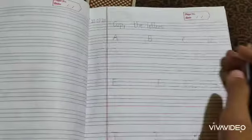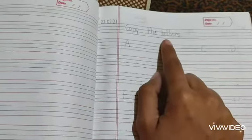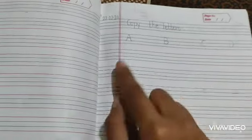Now parents are requested to mention page like this. Today's date, CW classwork. Then copy the letters. Copy the letters, that means they have to look here and copy them.